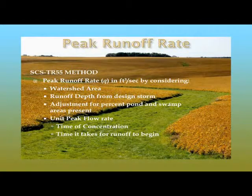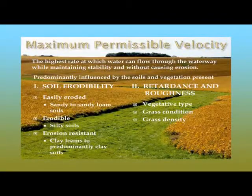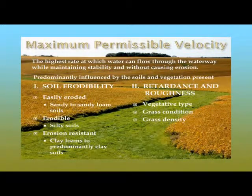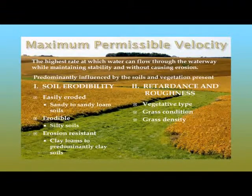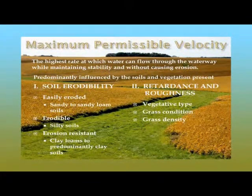An important factor in grassed waterway design is the maximum permissible velocity — the highest rate at which water can flow through the waterway while maintaining stability and without causing erosion. Two factors influencing permissible velocity are soil erodibility and the retardance and roughness of the vegetation. Soils range from easily erodible sandy to sandy loam, erodible silty soils, to erosion-resistant clay loam to clay soils. Vegetation density also plays an important role in resistance to flow.